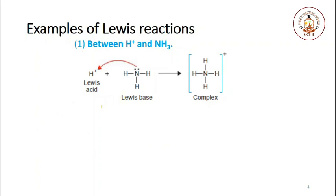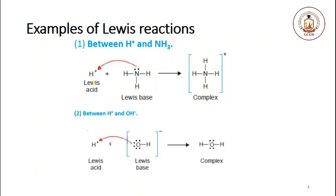The Lewis reaction between the proton and ammonia can be written as follows: the proton is a Lewis acid — it can accept an electron pair from ammonia. Ammonia is a base — it can donate an electron pair to the acid. The reaction between the proton and hydroxide is also a Lewis acid-base reaction. The proton acts as the acid and hydroxide acts as the base; hydroxide donates a pair of electrons to the proton and forms a complex.